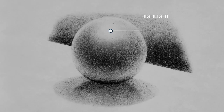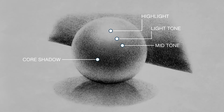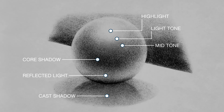This is the highlight, light tone, mid-tone, core shadow, reflected light, and cast shadow. Don't get the cast shadow confused with the reflection, which is right here. Those are your top six shadows and lights.